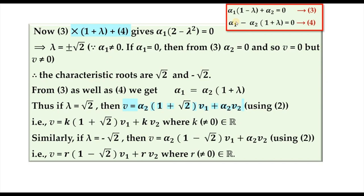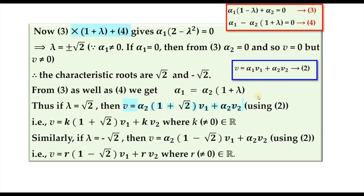From the equations, α₁ = α₂(1+λ). For λ = √2, taking α₂ = k (any nonzero scalar), the characteristic vector is v = k(1+√2)v₁ + kv₂. For λ = -√2, taking the nonzero scalar as r, the corresponding characteristic vector is obtained similarly. These are the characteristic roots and characteristic vectors.